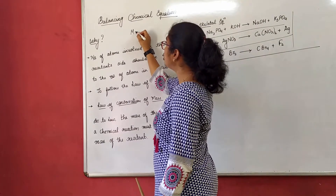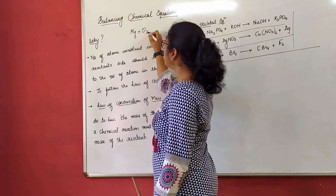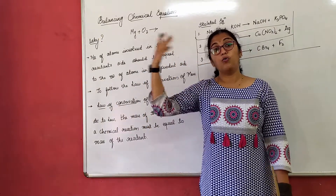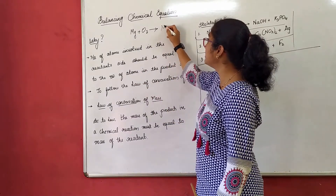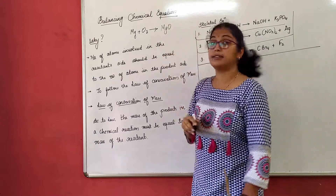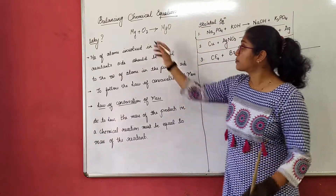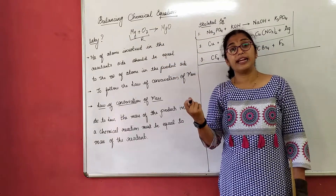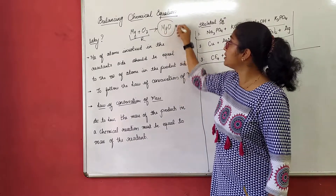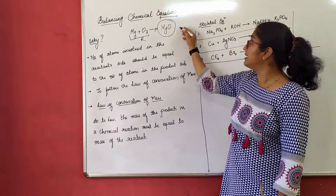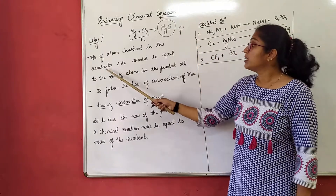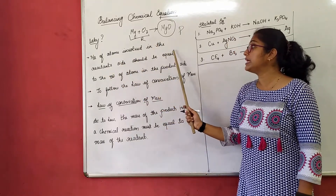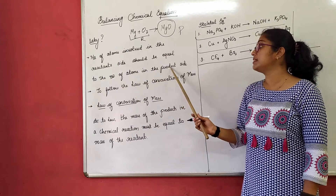Suppose I take a magnesium ribbon and burn it in the presence of oxygen. That means I am burning magnesium ribbon. The byproduct I get is magnesium oxide. Magnesium and oxygen are called reactants because magnesium is reacting with oxygen. And the magnesium oxide we get is the product. The number of atoms in the reactant side should be equal to the number of atoms in the product side.